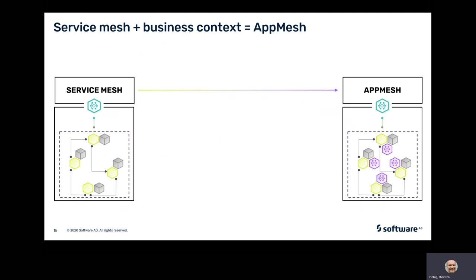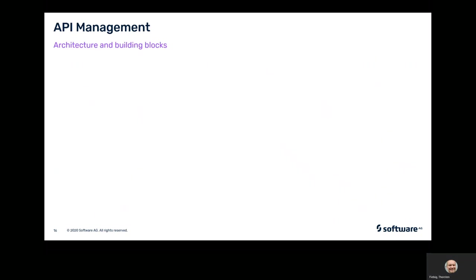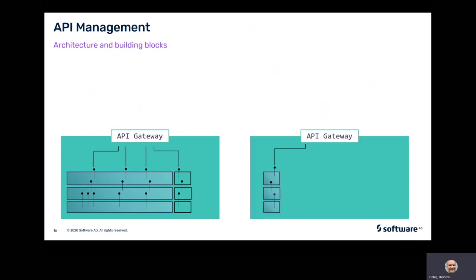This allows you to inject API-aware policy enforcement into your service mesh without leaving any gaps when it comes to service communication. App Mesh allows you to look at your service mesh and see applications and APIs within the mesh. Moreover, it allows you to configure policies on application and API level and inject them into your microservices without affecting availability. You can then build a logical architecture with domains and control the exposure of those domains via defining APIs and applying API gateways and micro gateways — controlling the exposure of APIs at the edge of domains and even at the edge of the whole microservice architecture.